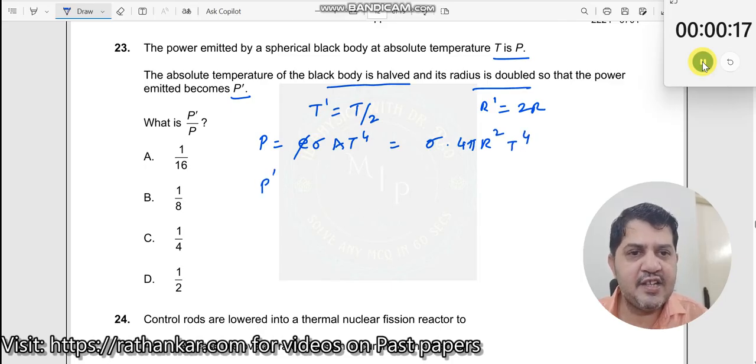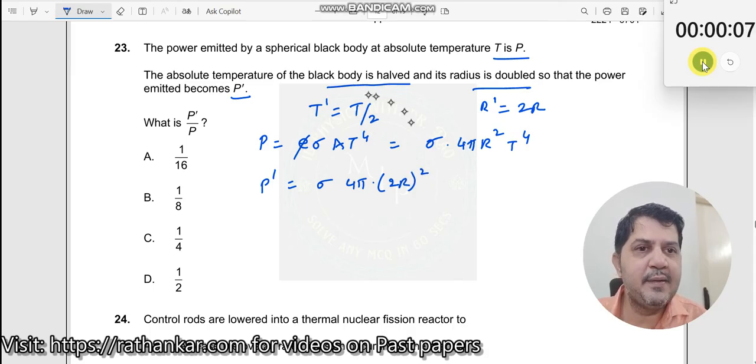Now P' will be equal to sigma 4 pi times what is R? R becomes doubled, so this becomes 2R, the whole squared. T becomes halved, so this becomes T by 2, the whole squared.